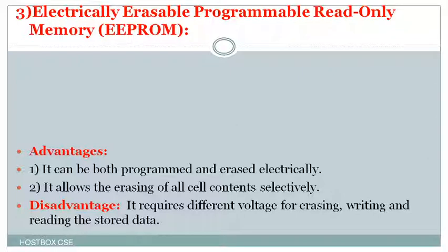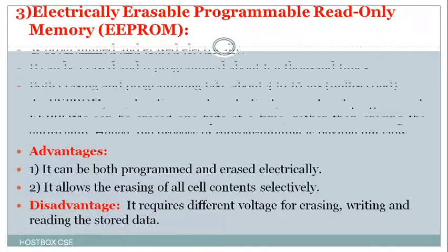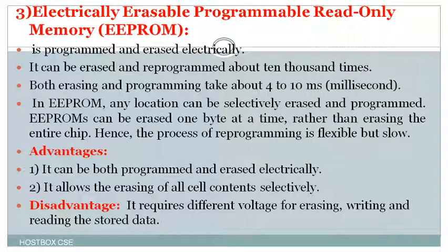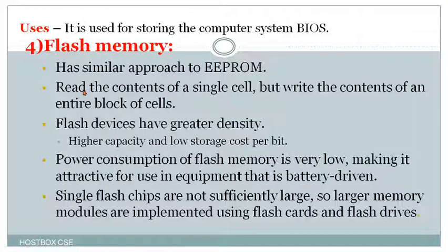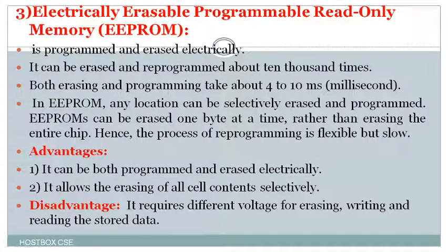The next type is EEPROM — Electrically Erasable Programmable Read-Only Memory. It can be programmed and erased electrically, so there is no need to physically remove the chip. It can be erased and reprogrammed about 10,000 times. Both erasing and programming take just 4 to 10 milliseconds. In EEPROM, any location can be selectively erased and programmed — meaning one byte at a time rather than erasing the entire chip. Hence the process of reprogramming is flexible, but slow.